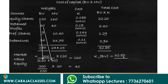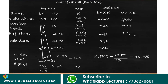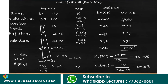For market value weights: 160 × 18.5% = 29.6, 40 × 18% = 7.2, 10.4 × 14.3% = 1.49, and 33.75 × 11% = 3.71. Total cost is 42. Overall cost of capital using market value = 42 / 244.15 = 17.2 percent.